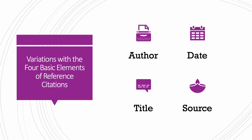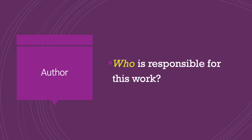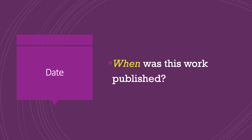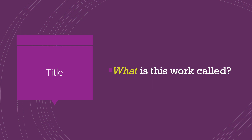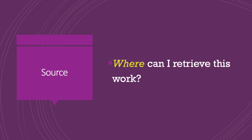Author, date, title, and source are the four main building blocks for any APA Style citation. When considering the author, you're asking: who is responsible for this work? When considering the date, you're asking: when was this work published? When considering the title, you're asking: what is this work called? When considering the source, you're asking: where can I retrieve this work?